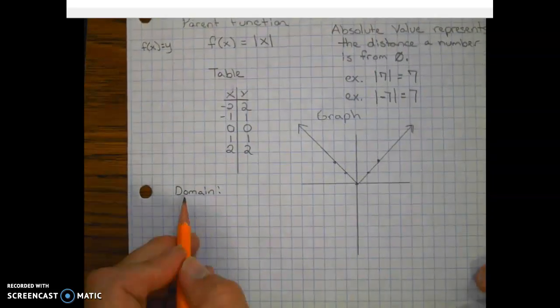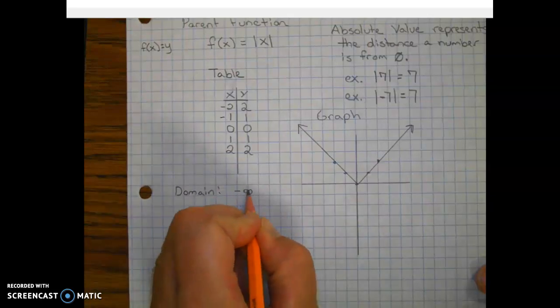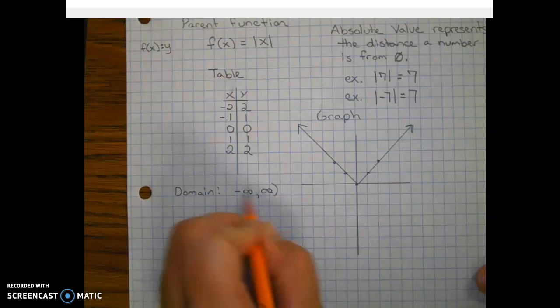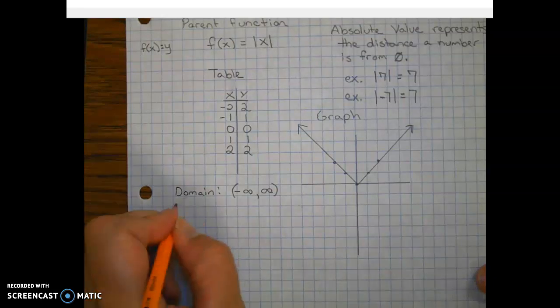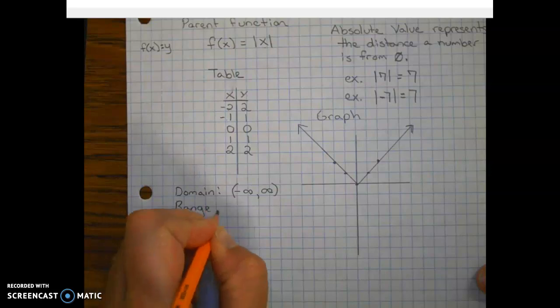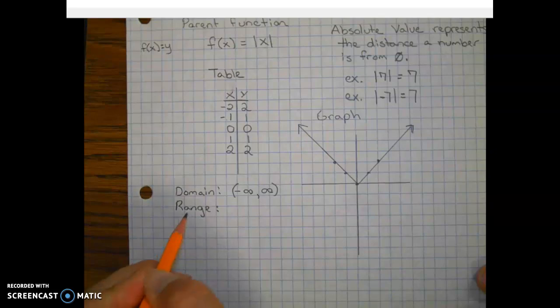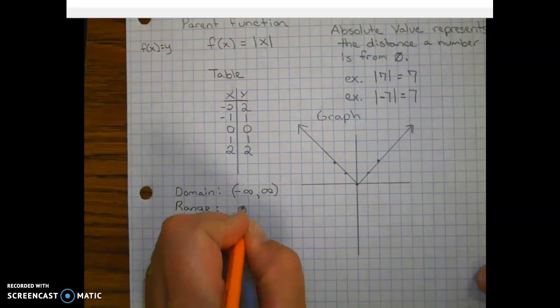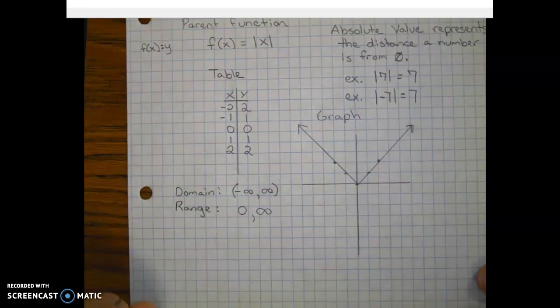So domain is left to right. So we're going from negative infinity on the left to positive infinity on the right. And I went ahead and used interval notation. Range goes from lowest to highest. So our lowest point—now remember, range is y. So our lowest y value is zero. And it goes up infinitely, so positive infinity.